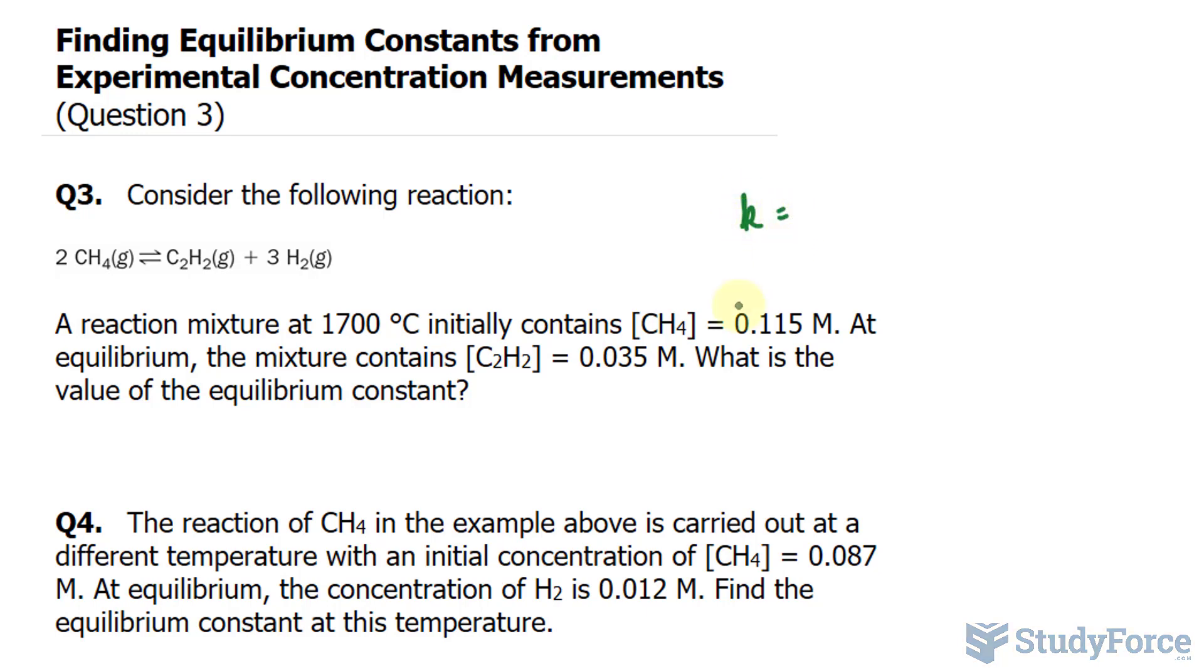So we'll write down K is equal to the concentration of the products over the concentration of the reactants. So we have C2H2, its concentration, multiplied by H2 and that's being raised to the power of 3 because of this coefficient, and that is being divided by CH4, its concentration, raised to the power of 2.